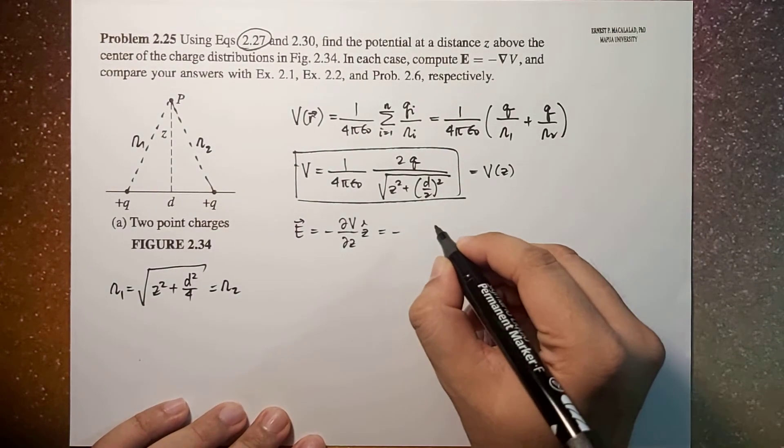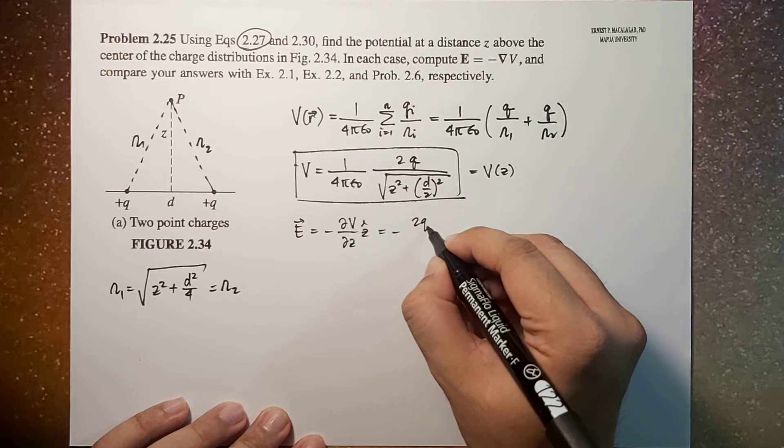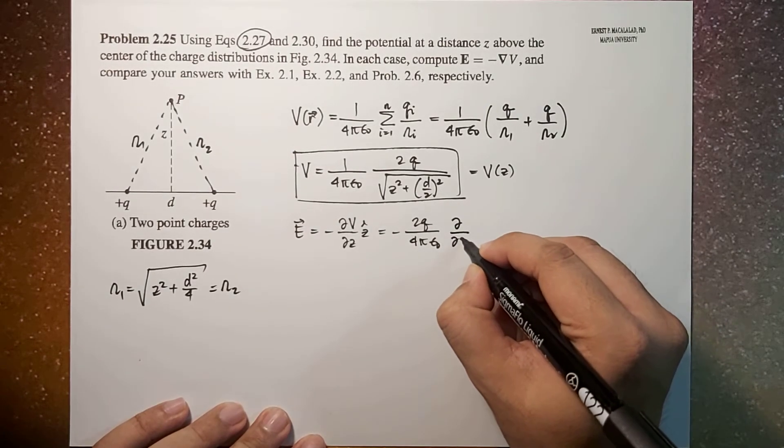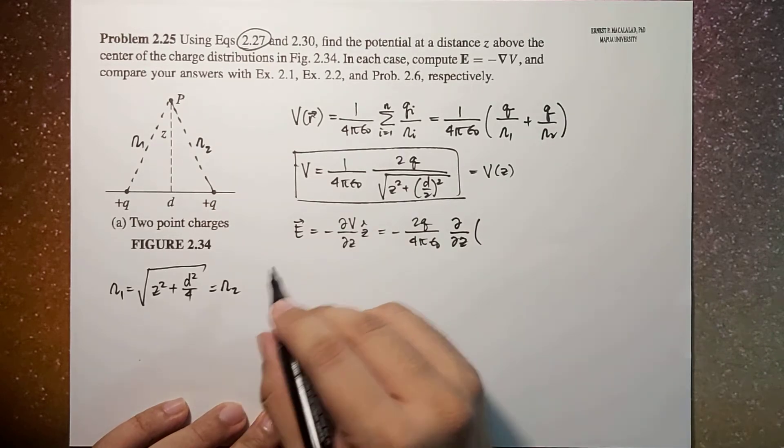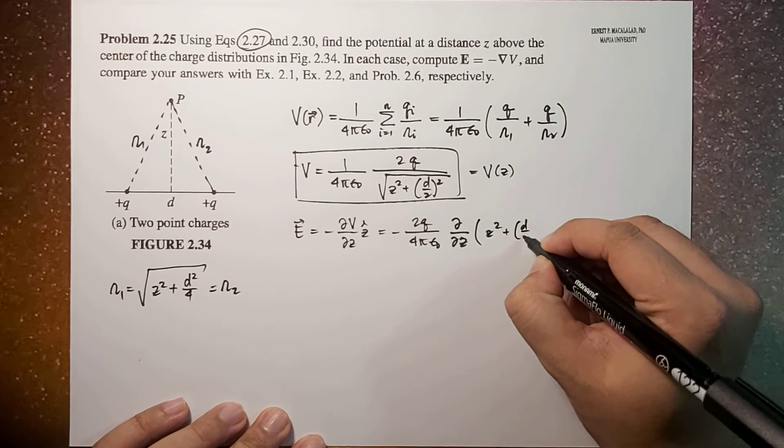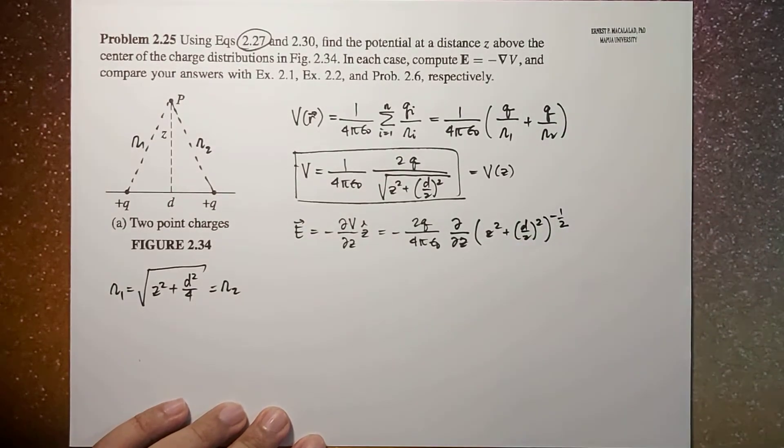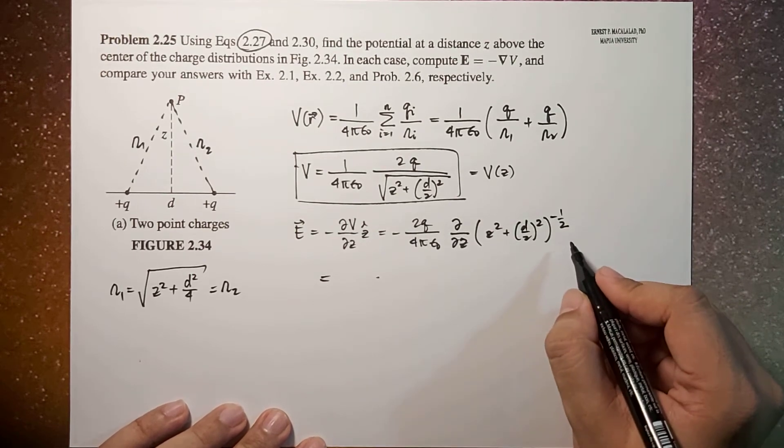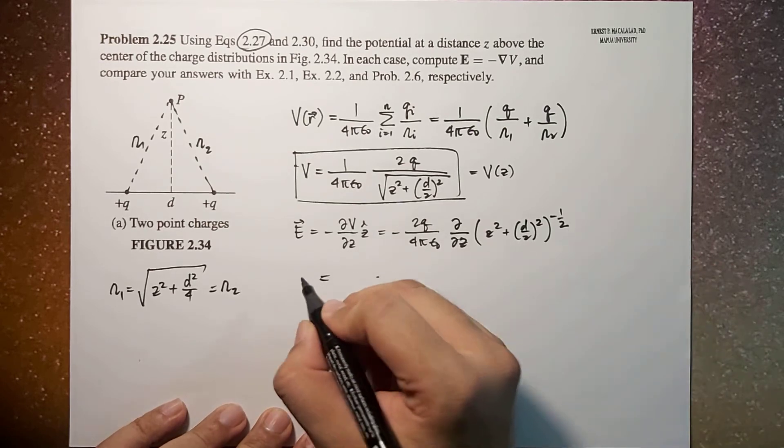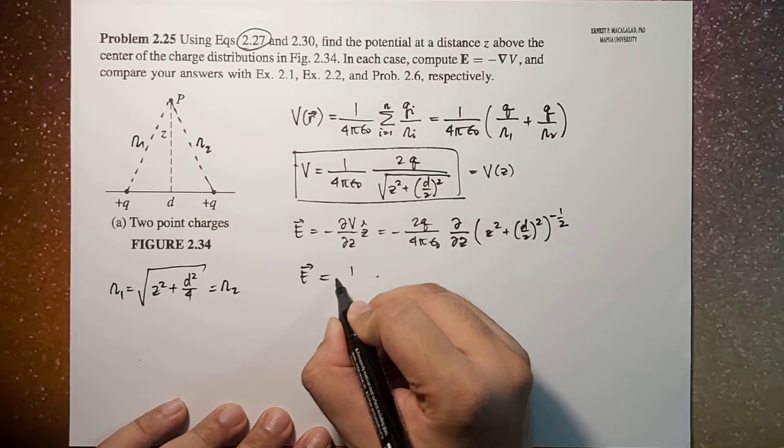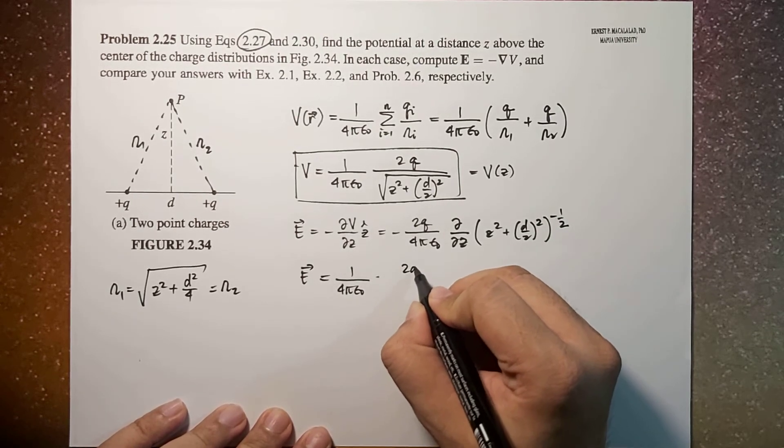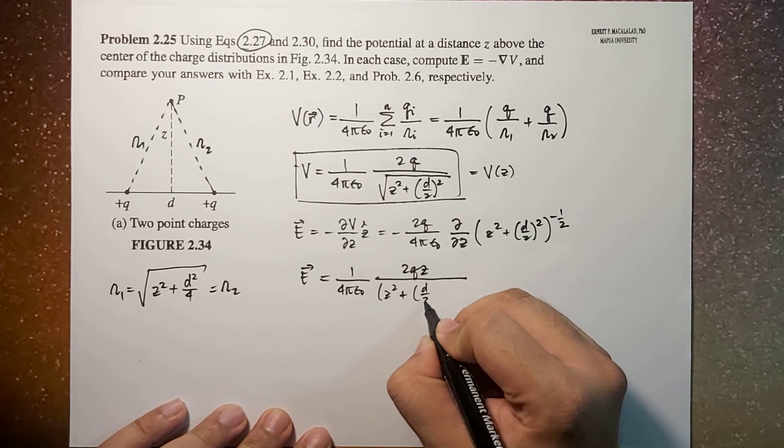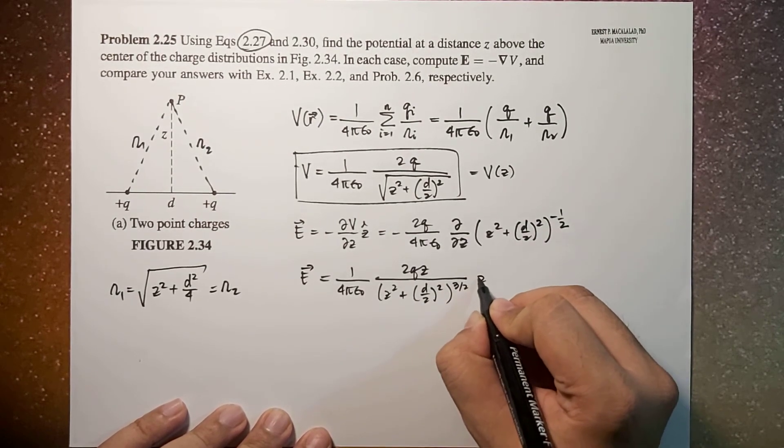So this will now be equal to negative 1 over 4 pi epsilon naught times 2Q times the derivative with respect to Z of Z squared plus D over 2 squared to the negative 1 half. So this electric field, solving for this derivative will give us the result E equals 1 over 4 pi epsilon naught times 2QZ divided by Z squared plus D over 2 squared to the 3 halves, Z hat.